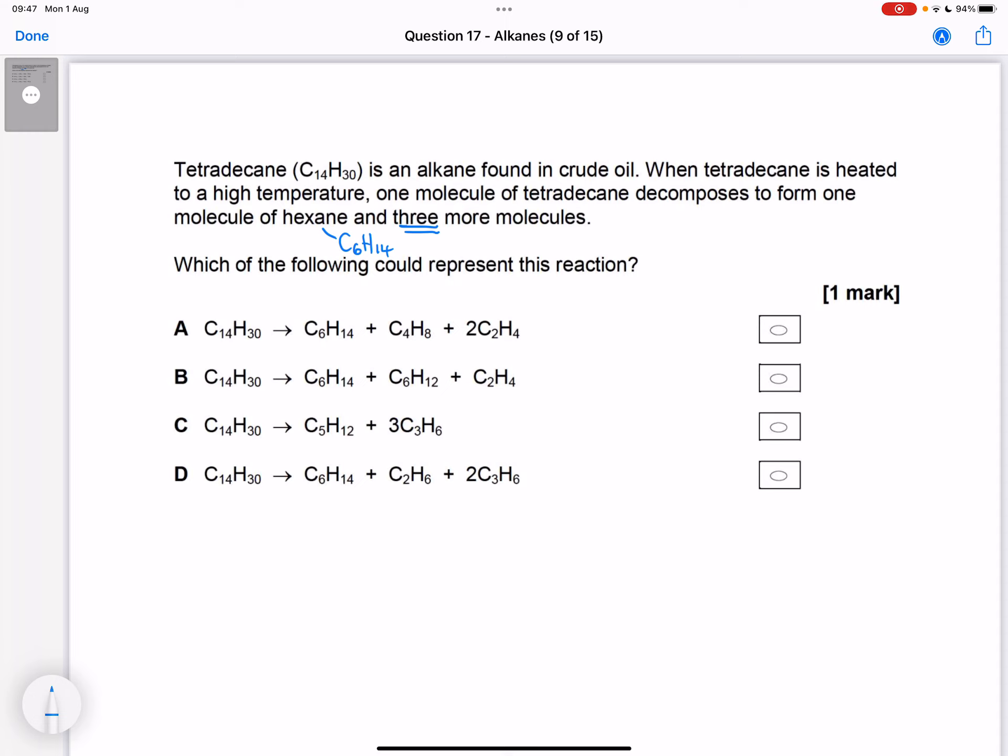So we can immediately rule out C because that's not got hexane in it. Now we can see that we've got hexane in the remaining things, but this one only has 2 more molecules, so we can rule out B.